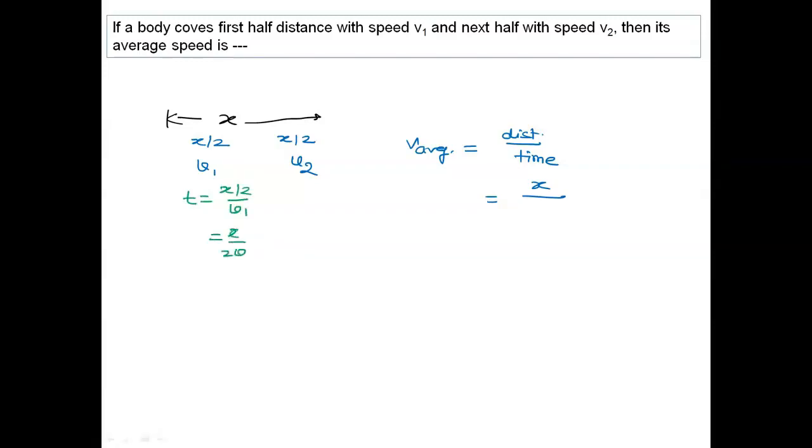I will say x upon 2v1, this is the time for this journey. Then time for this journey, if I calculate similarly, I will say x upon 2v2. Both the times I total and I put here: I will write x upon 2v1 plus x upon 2v2. Now you take the LCM and solve yourself, I am leaving as an exercise for you.